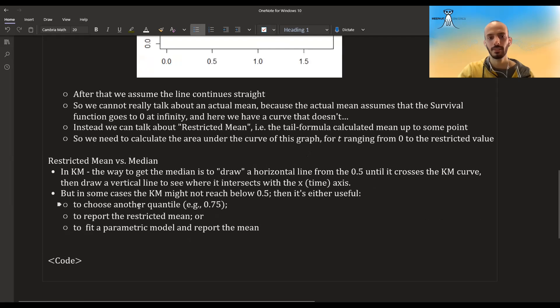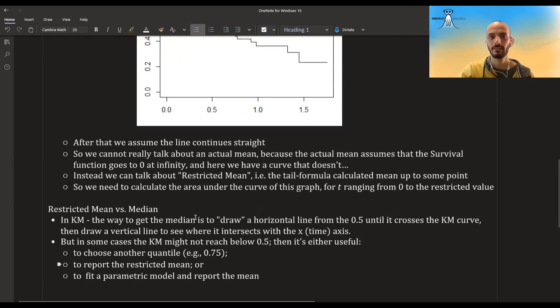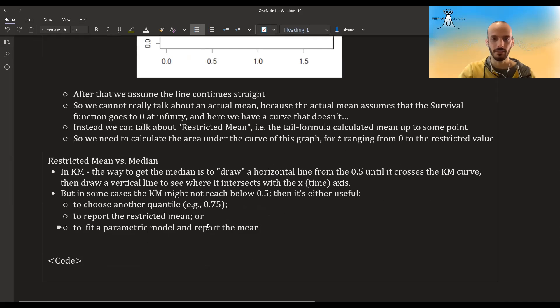So what can you do? Well, you can either choose another quantile, for example 0.75 if the Kaplan-Meier does go below 0.75. You can report the restricted mean, or you can fit a parametric model and then report the mean or the median of that parametric model.